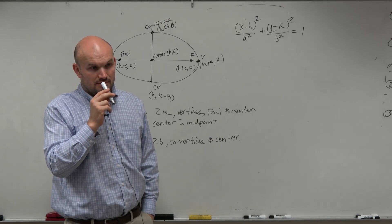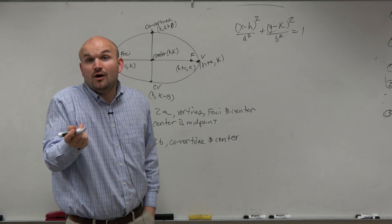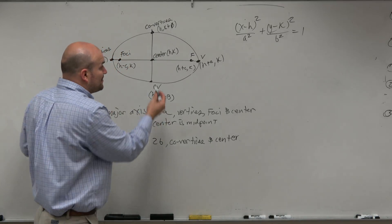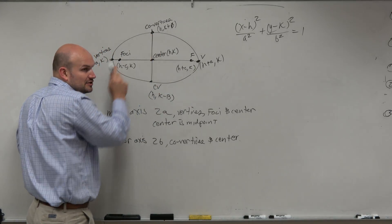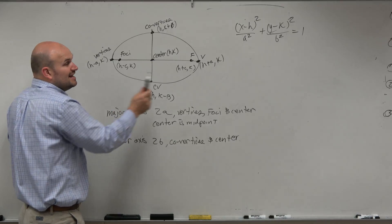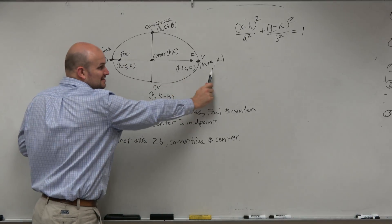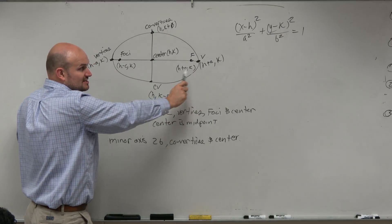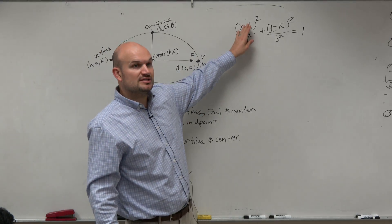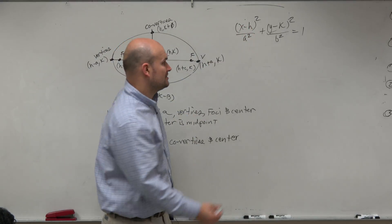It's going to be horizontal. Right. So? A is the biggest. A represents the distance from the center to your vertices, which is always going to be longer than your center to your co-vertices. Yes? Since a is horizontally oriented, since our major axis is horizontal in this case, we want to make sure our a squared is under our x.